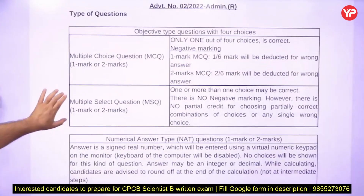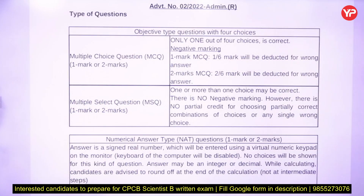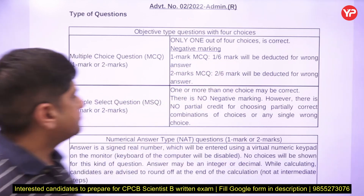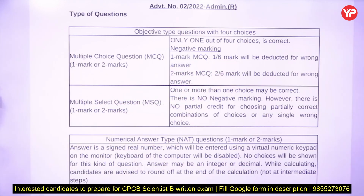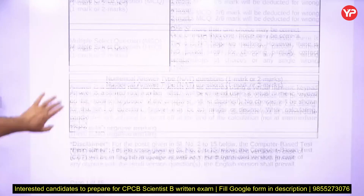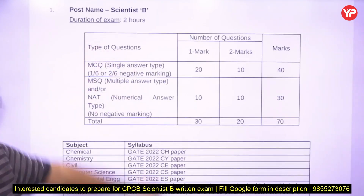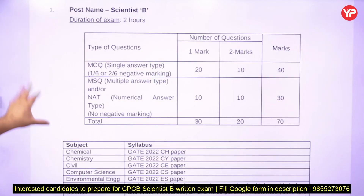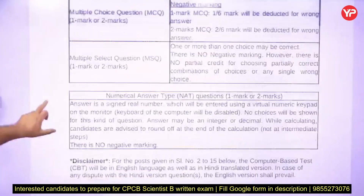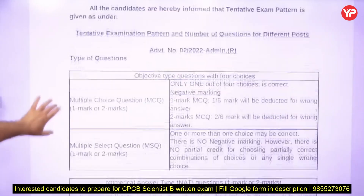Let me explain the pattern. You are going to get objective type questions with four choices — multiple choice questions. One mark and two mark questions will come. Now for the Scientist B post, which most of you are filling, let me explain the pattern. There are different posts but let's focus on Scientist B.